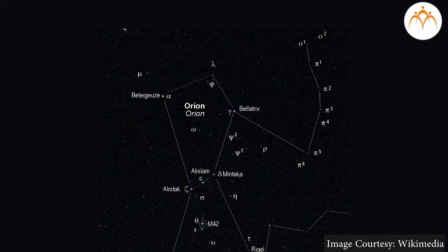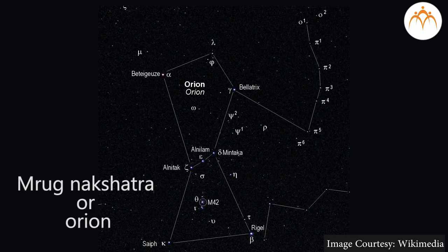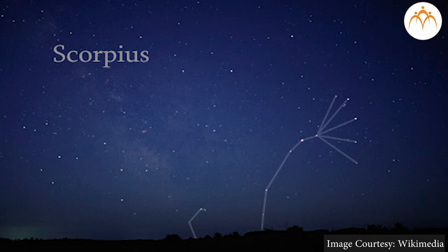Mruga Nakshatra, or Orion: It is visible clearly from January to March and is very easy to find in the sky. It is also known as the Hunter. The name comes from Greek mythology — Orion was a giant hunter who felt that he could kill all the animals on earth. Mother Earth did not like the idea, and so after his death, he was placed in the sky.